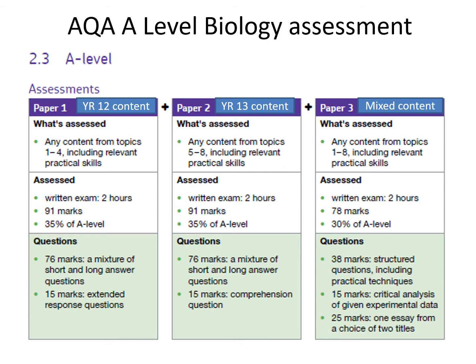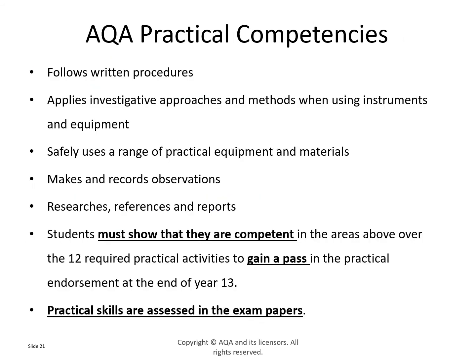Paper Two is the Year 13 content, topics five to eight, and that is also 35%. Then there is a third paper which can draw from any topic in Year 12 or Year 13. It also includes a 25-mark essay question and you always have a choice of two titles, so you only ever write one essay. Paper Three is worth 30% of your grade.